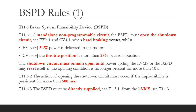So let's look at the rules. They're in Section T, which means they're applicable to both EV and combustion engine cars. The BSPD must be standalone and non-programmable. It will open the shutdown circuit if there is simultaneous hard braking and considerable power to the powertrain for more than 500 milliseconds. For electric vehicles, it's 5 kilowatts electrical power to the motors, and for combustion engine cars it's based on throttle position.